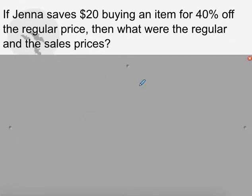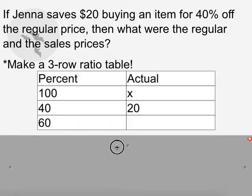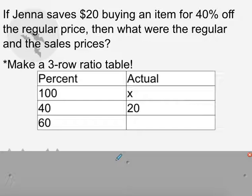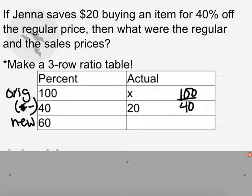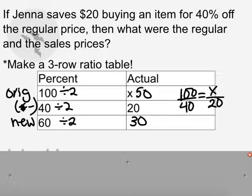And last example here. If Jenna saves $20 buying an item for 40% off the regular price, then what is the regular price? We can use a three-row ratio table. We have our original 100%, we have $20 which is the discount, which is 40%. And we want to find the original. Well, let's start with setting up a proportion for the original price. So we have 100 over 40 equals x over 20. 40 divided by 2 is 20. So 100 divided by 2 is 50. The original price is $50, and 60% of that, which she paid, is $30.